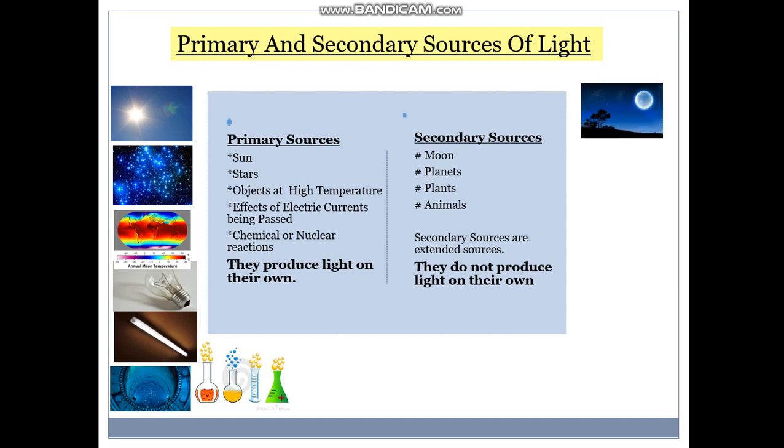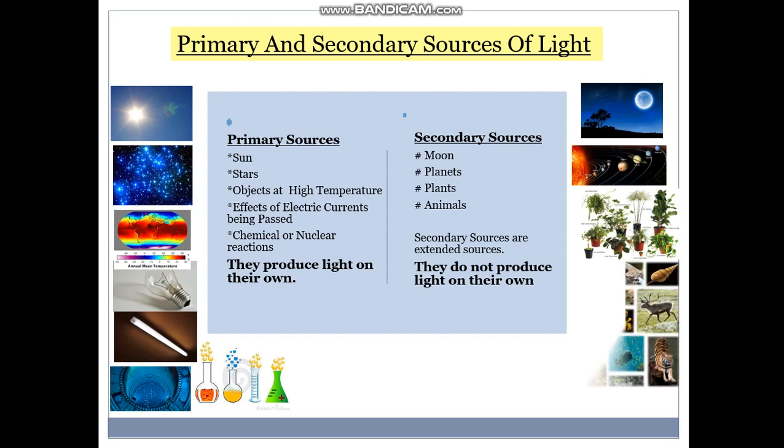Secondary sources like moon, planets, plants, animals. Secondary sources are extended sources. They do not produce light on their own.